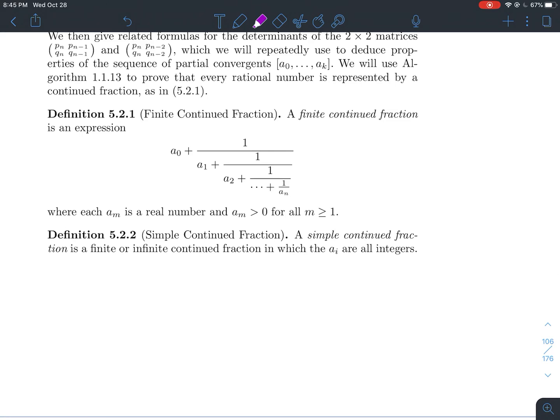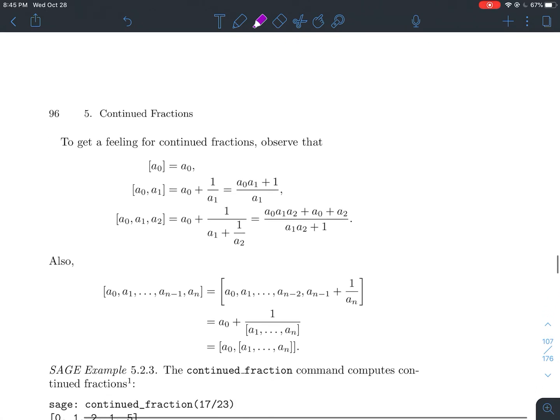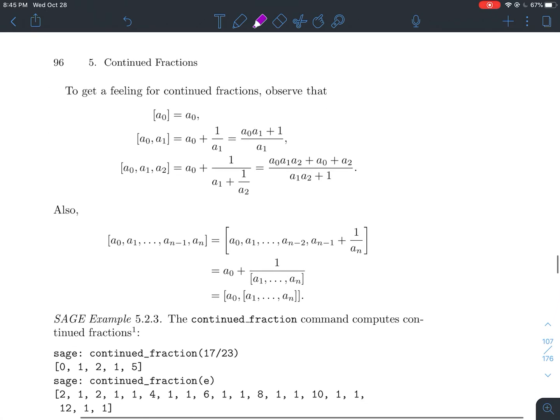One of the last definitions is we already said we had a finite continued fraction. That just means this process terminates. You do have an actual last denominator. But the last adjective that we'll throw on to continued fraction is simple. And this is the one we'll deal with most in this class, a simple continued fraction. All that means is that it could be finite or it could be infinite, but what I want to make sure is that all the a_i's are integers.